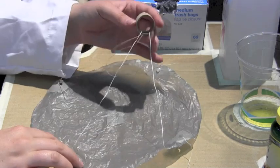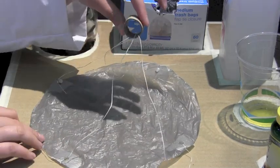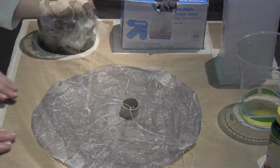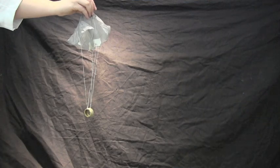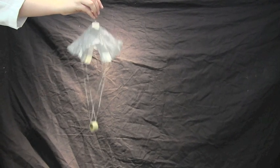Your parachute is now complete. Your floss should be straight across and not twisted. When you're ready, grab your parachute from the center hole and drop it to see how it works.